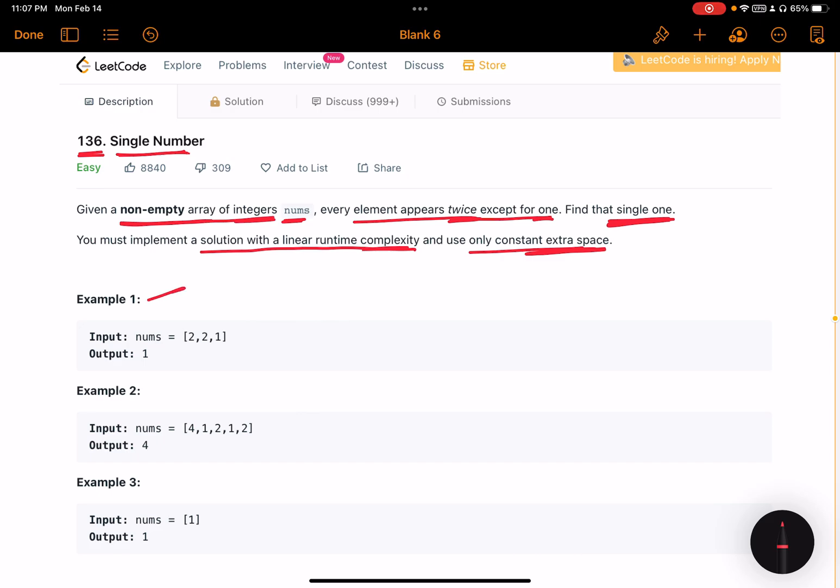Looking at example number one, where nums is [2,2,1], the number two is repeated twice but one is repeated only one time, hence we will return 1.